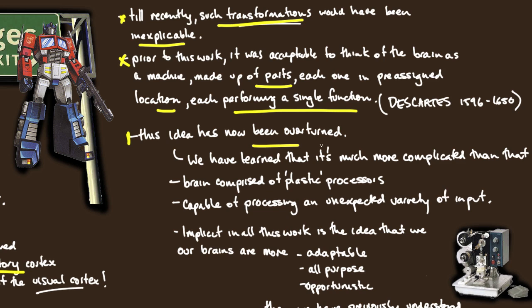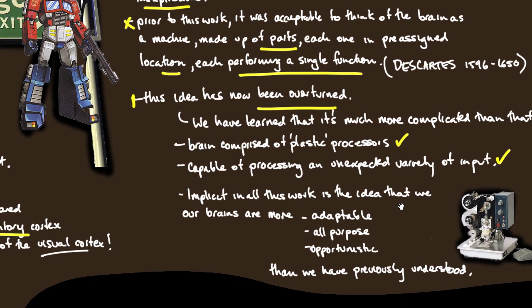This idea has been overturned. We've learned it's much more complicated - the brain is comprised of plastic processes, capable of processing an unexpected variety of input.